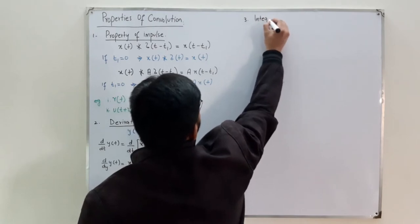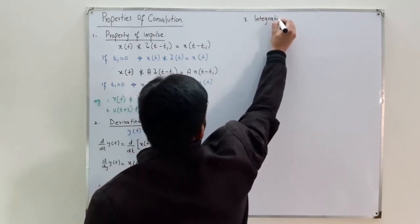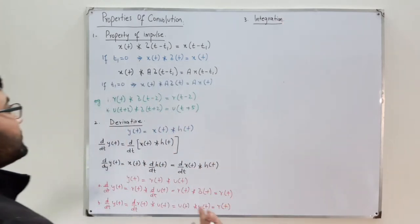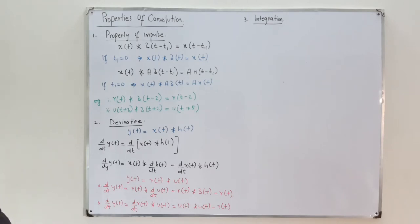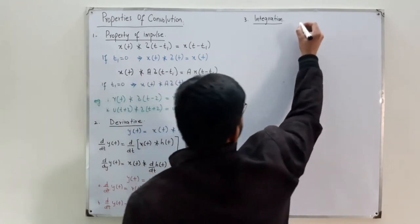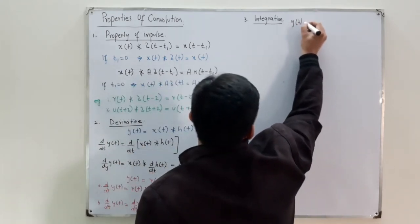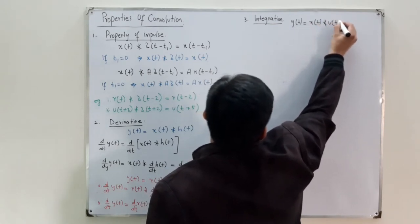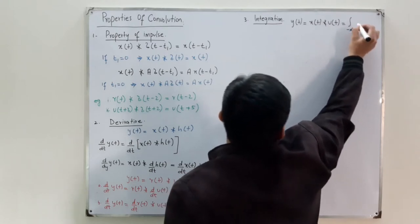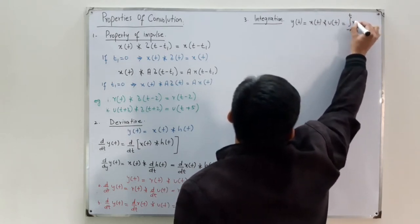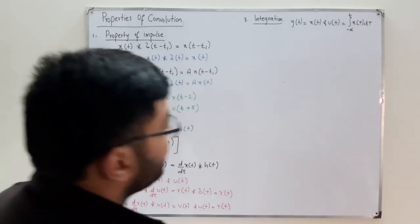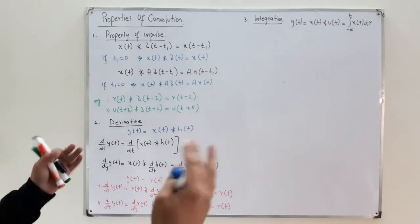The third property is integration. Integration is a special case of convolution with the unit step signal. If any general signal x(t) is convolved with u(t), the result y(t) equals the integral from negative infinity to t of x(τ) dτ.